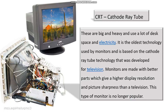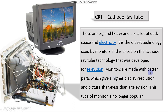We are going to discuss three types of monitors. First is the CRT, or cathode ray tube monitor. You may not see these monitors these days because they have been replaced by the more advanced LCD and LED. These are big and heavy, use a lot of desk space and electricity — that is the biggest drawback. It is the oldest technology, based on cathode ray tube technology developed for television. Monitors were made with better parts, giving higher display resolution and picture sharpness. This type of monitor is no longer popular.